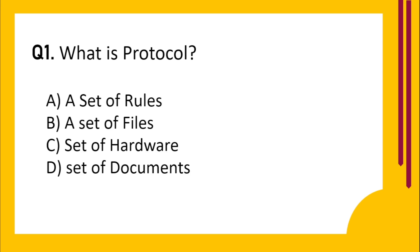Question number 1. What is protocol? Option A: Set of rules. Option B: Set of files. Option C: Set of hardware. Option D: Set of documents. Correct answer is A: Set of rules.